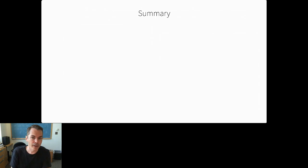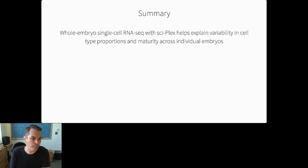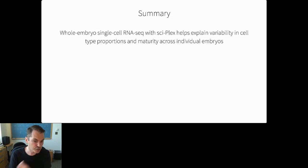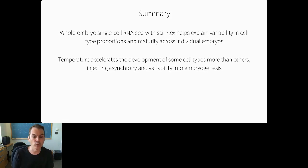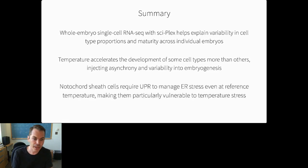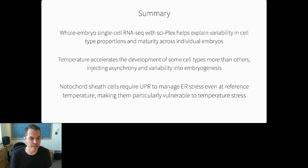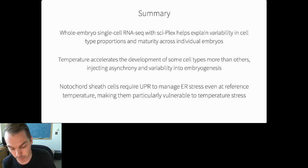To summarize this part: I've told you about whole-embryo single-cell RNA-seq using Skyplex to explain variability in cell type proportions and maturity across many individual embryos. We used that technique to show that temperature accelerates development of some cell types more than others, injecting asynchrony and variability into embryonic development. I zoomed in on the notochord, which requires UPR to manage ER stress even at reference temperature, making it the first point of failure in the face of temperature stress, with defects in the notochord explaining the anatomic phenotypes seen in temperature-stressed fish.